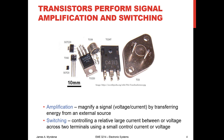Transistors come in a lot of different packages. The TO220 is very similar to the package on our TIP-31 relatively large-current transistors. There's also the TO92, which is one we'll use for small-signal transistors. As you'd expect, the larger the package, typically the larger the current capacity.